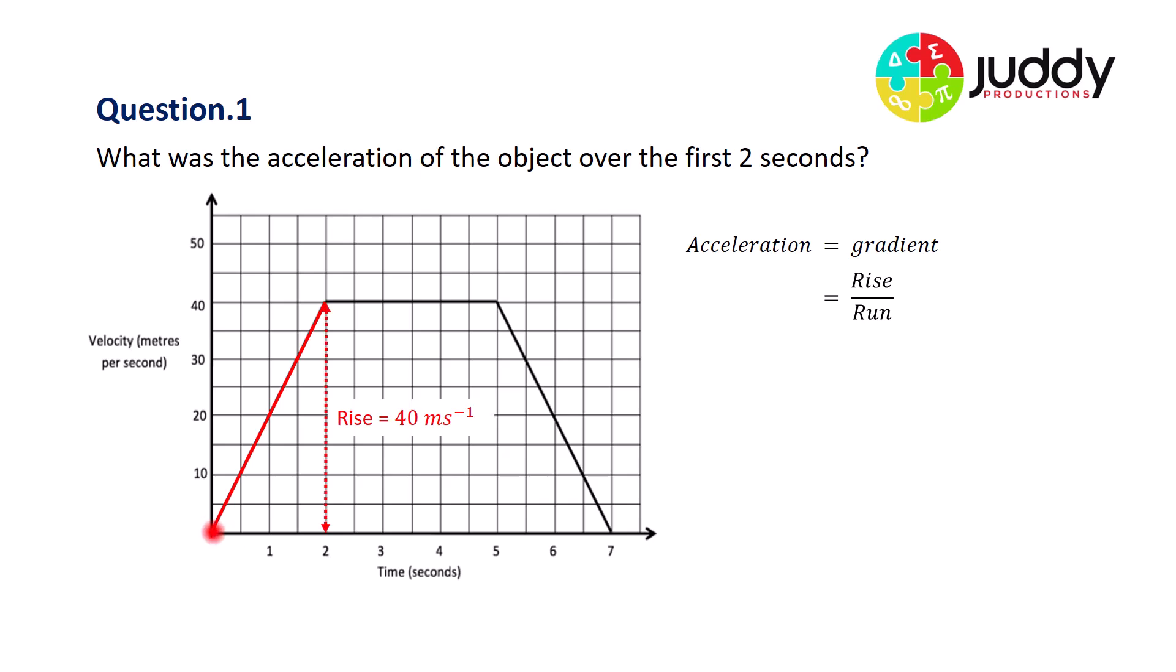First of all, the rise. We're comparing the start of this line to the end of this line, and we can see that it has risen from zero up to 40, so it has a rise of 40 meters per second. The vertical axis, of course, is measured in velocity in meters per second. The run, on the other hand, is moving left to right on the time axis. At the start of this trip, we're at a time of zero, and at the end of this section, we have traveled a time of two seconds, so the run is two seconds.